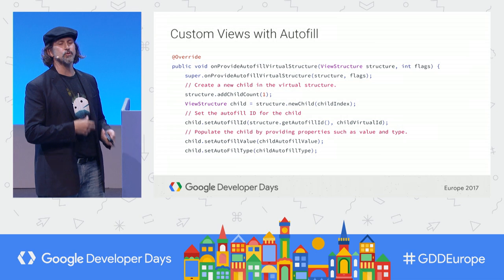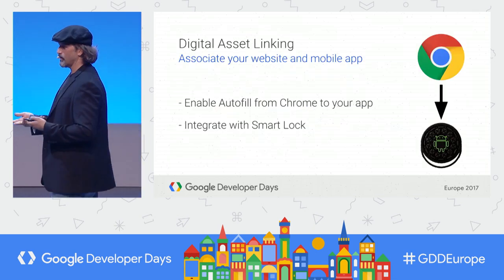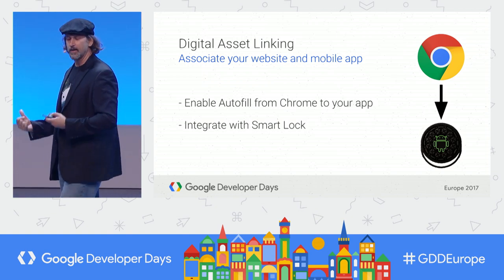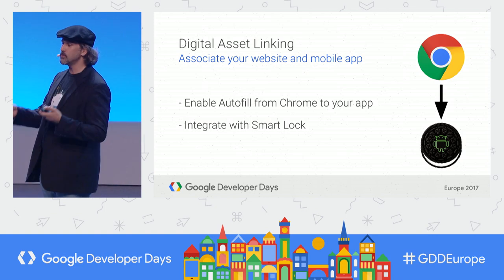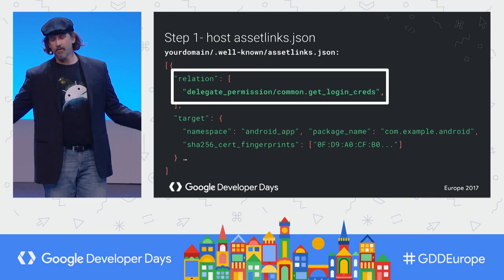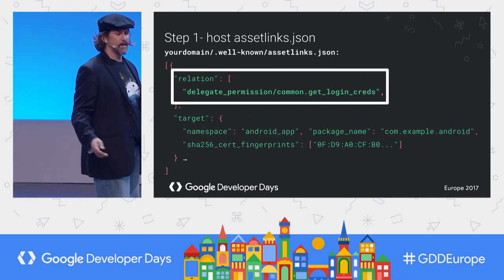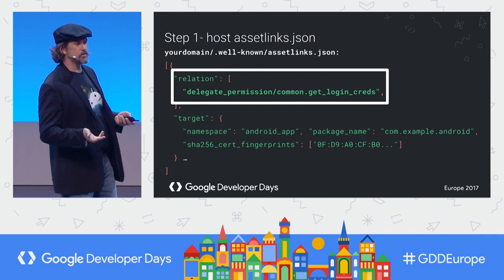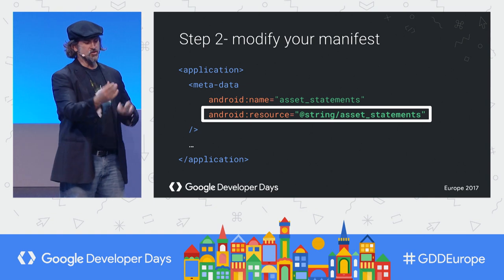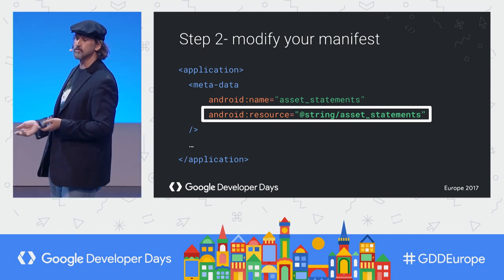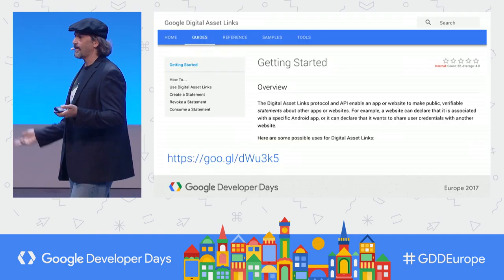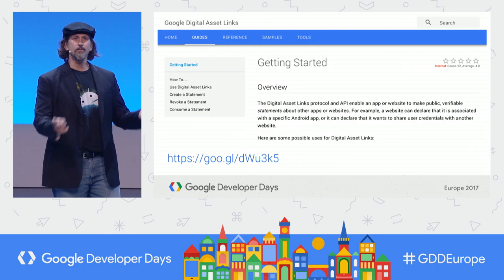No matter how you build your apps, consider doing this. If you have a website, the Google autofill provider can share credential information between your web and your app if you create a digital asset link. You put some JSON on your server to define that you want to share login credentials between your website and your app. Then you modify your manifest with a string pointing to a similar JSON resource containing a list of web targets and permissions. With these two steps, you can share credentials between your website and app.